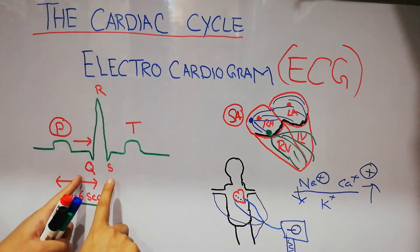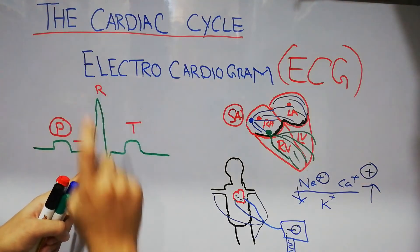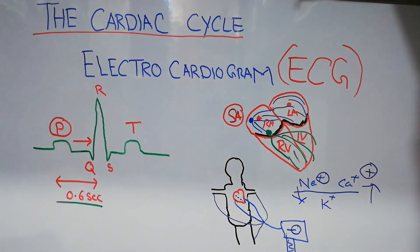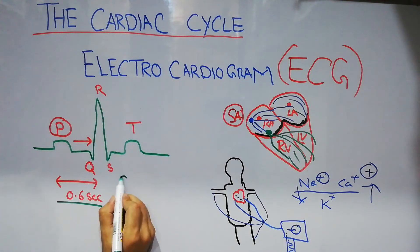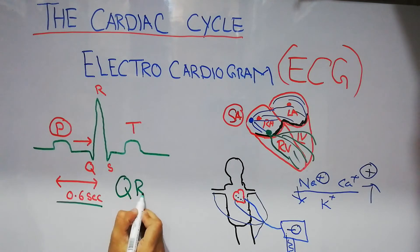The depolarization process of the ventricle is recorded as the QRS complex — consisting of three waves: the Q wave, the R wave, and the S wave, together known as the QRS complex.